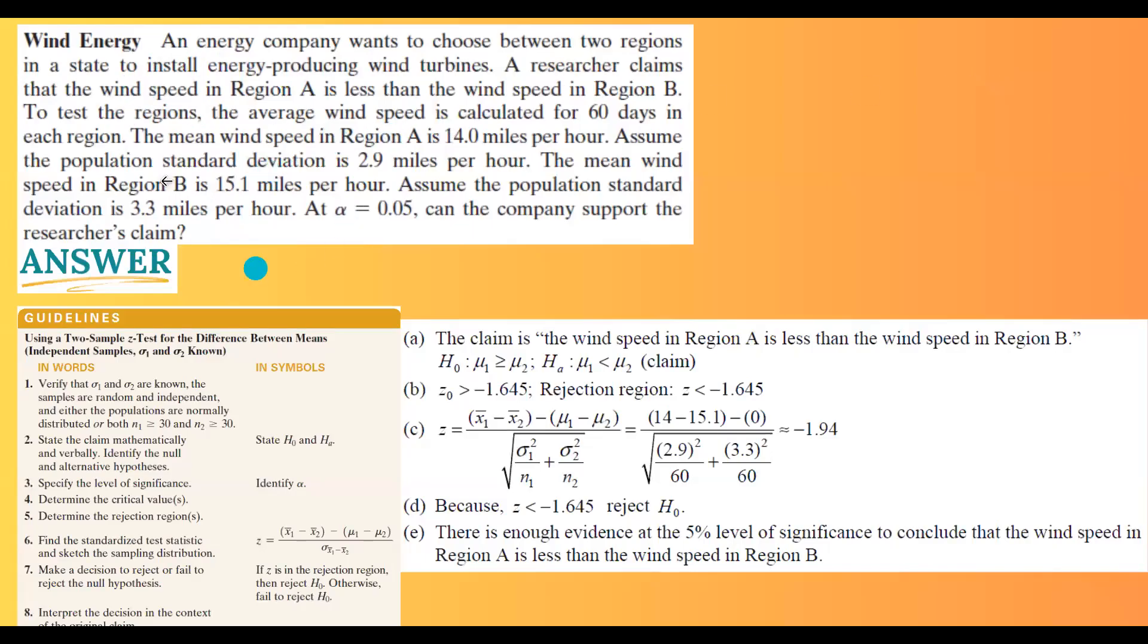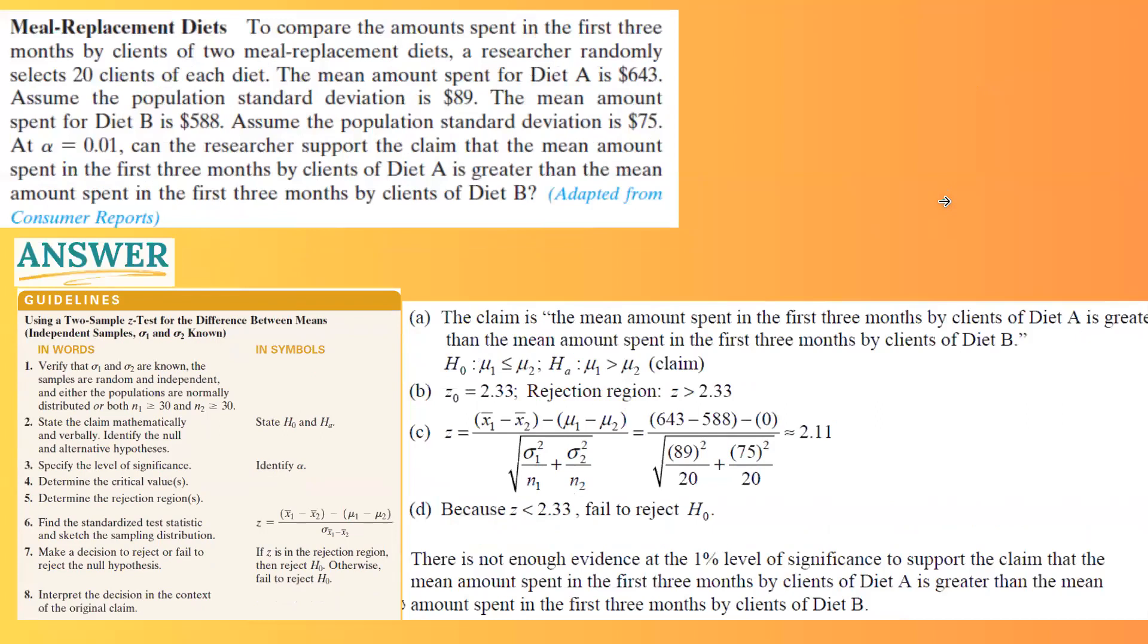So far, we ran a hypothesis test for a left tail test. In this question, we have a right tail test. Let us read the question carefully. To compare the amount spent in the first three months by clients of two meal replacement diets, a researcher randomly selected 20 clients for each diet. The mean amount spent for diet A is $643. Assume the population standard deviation is given to us as $89.